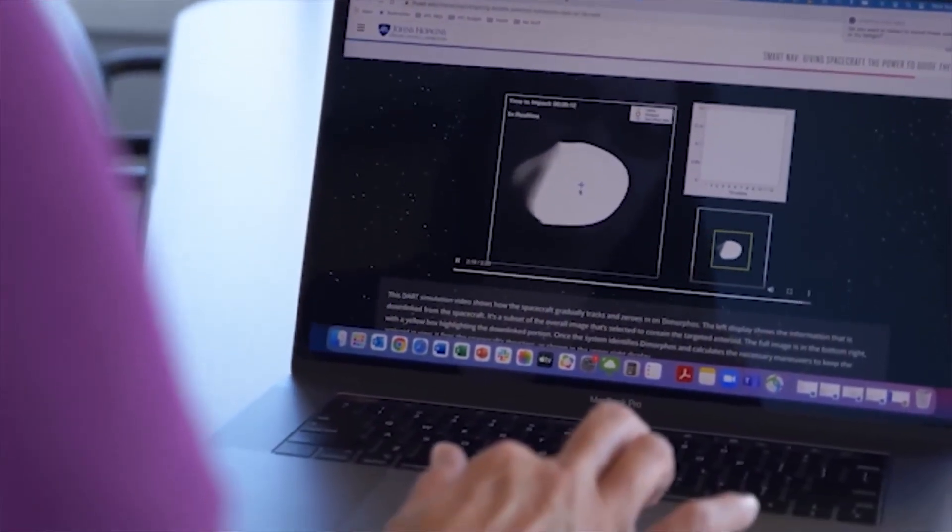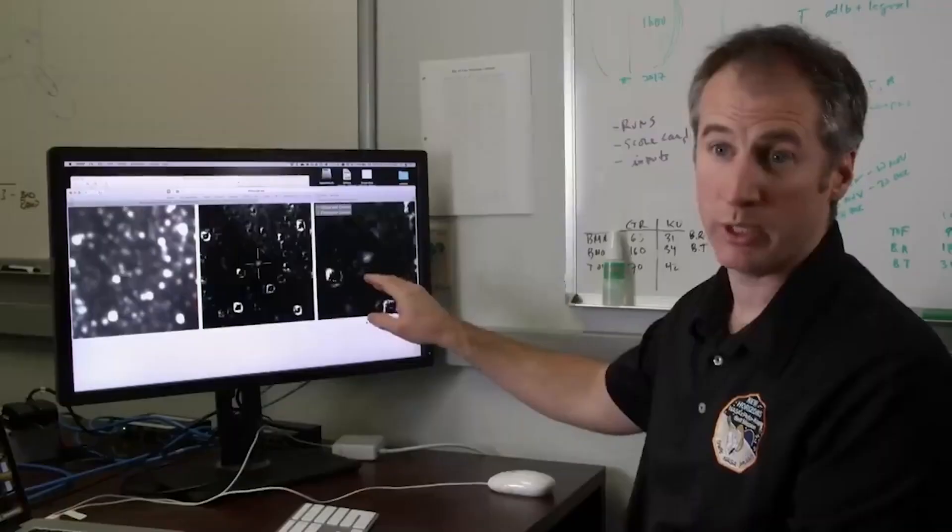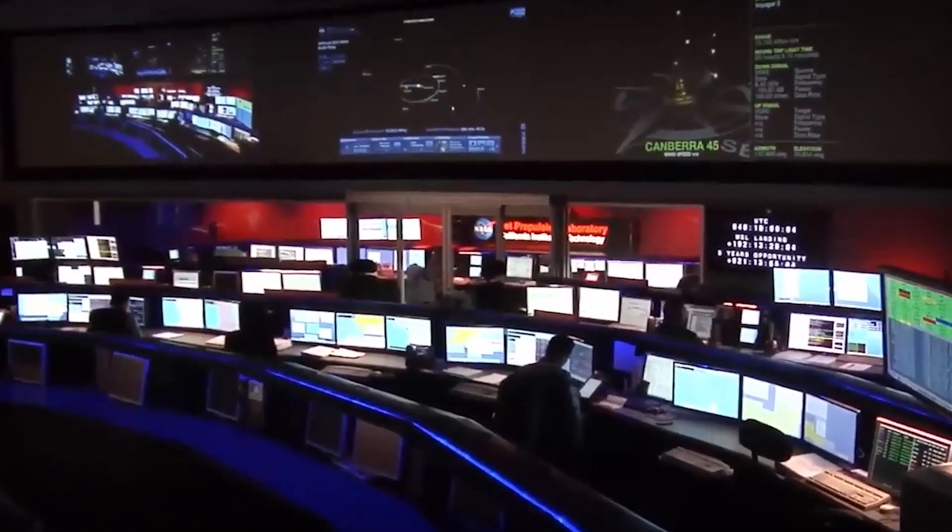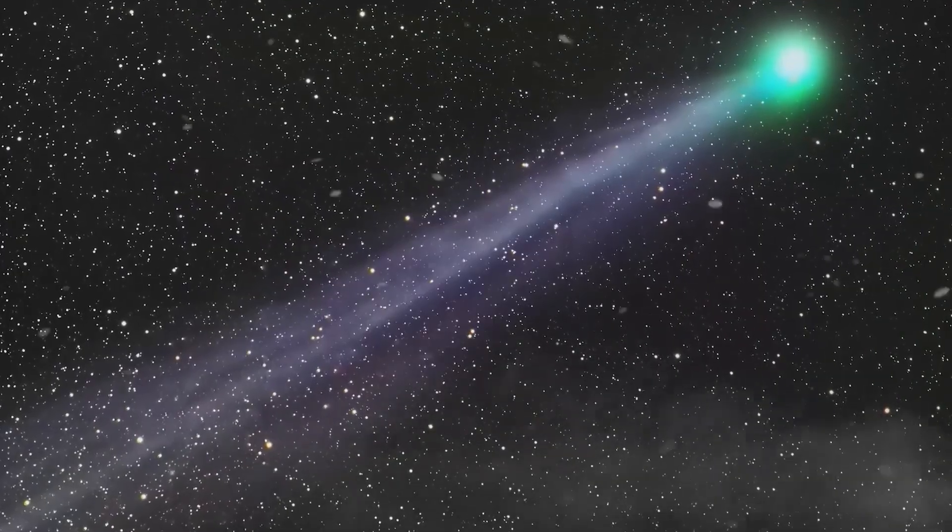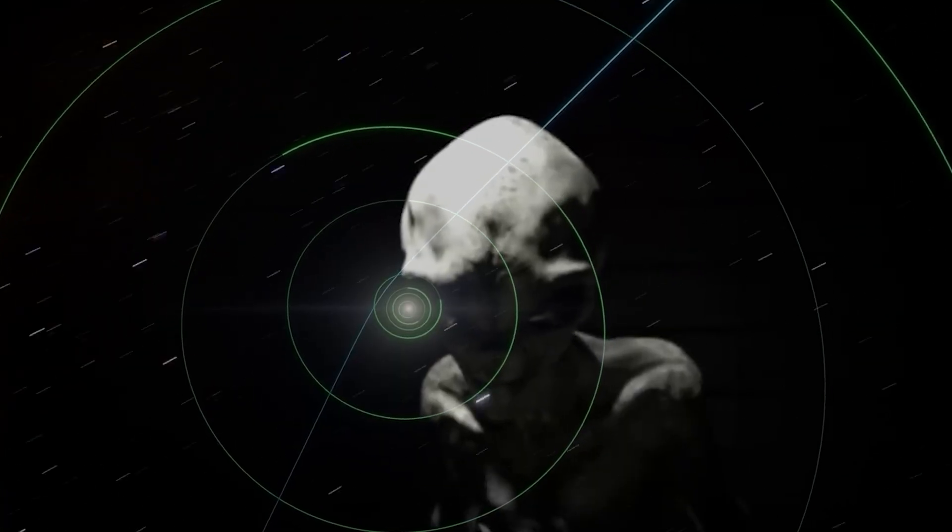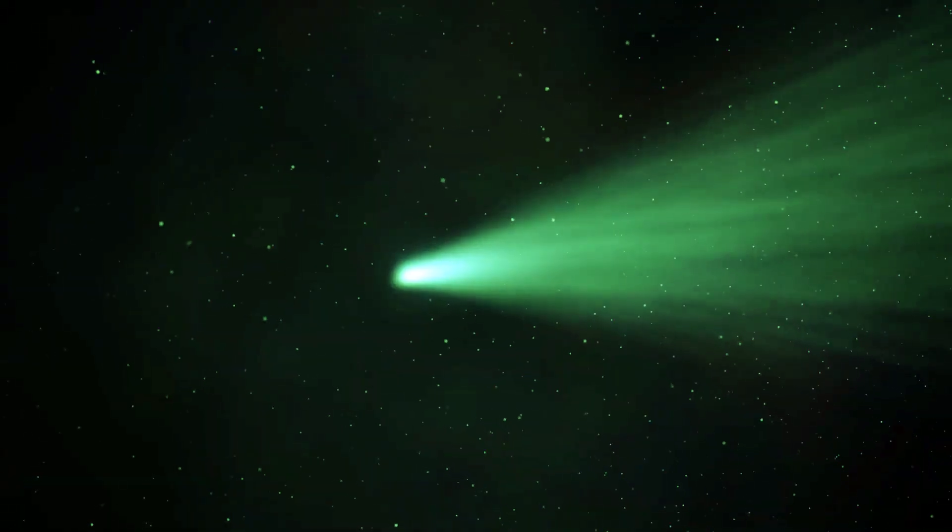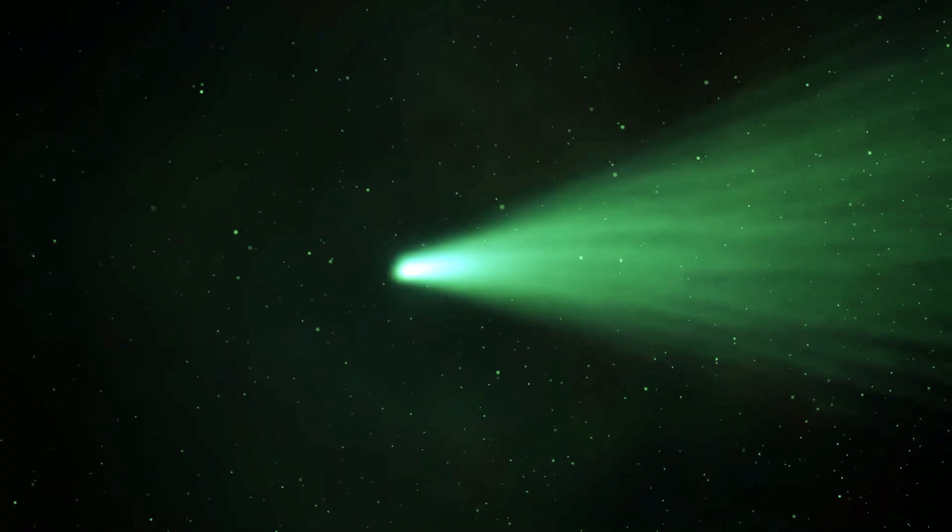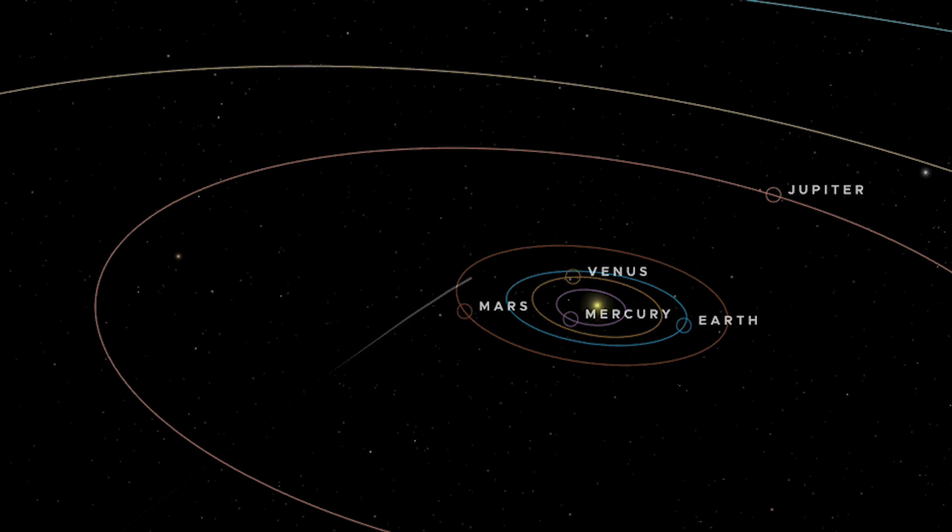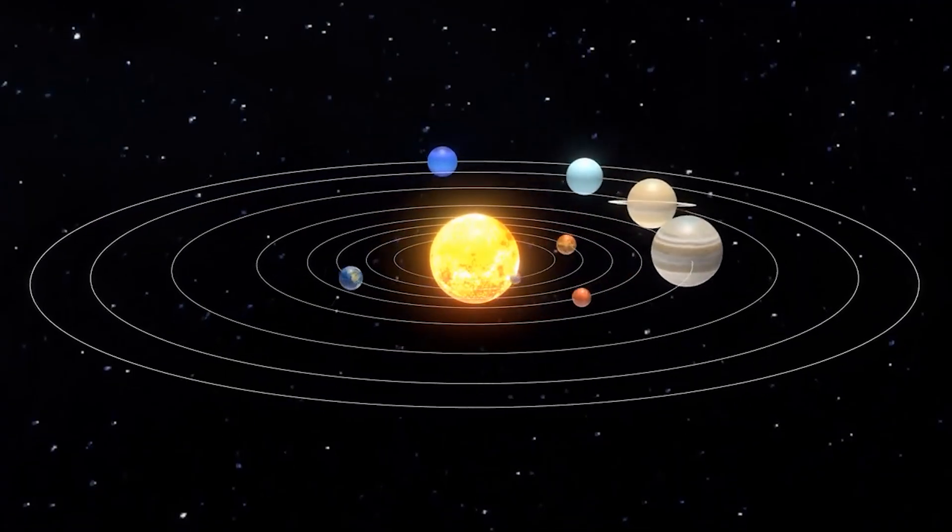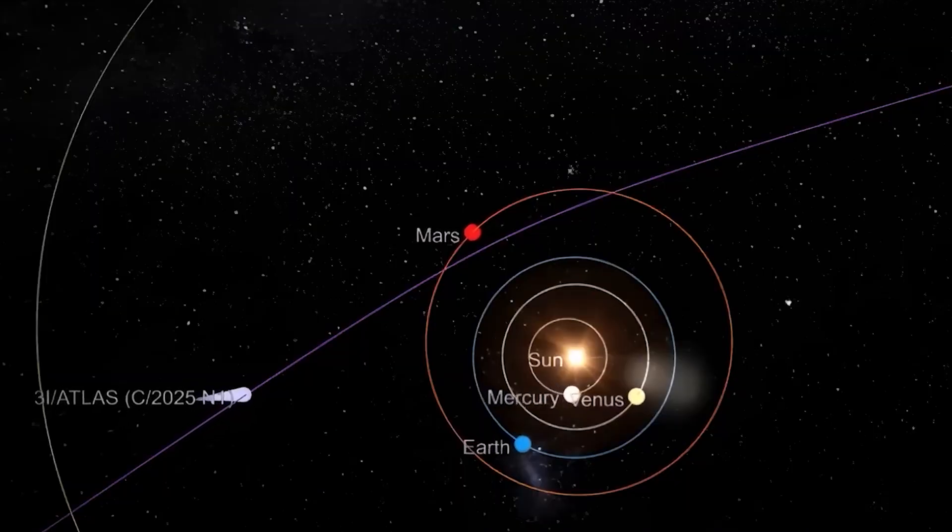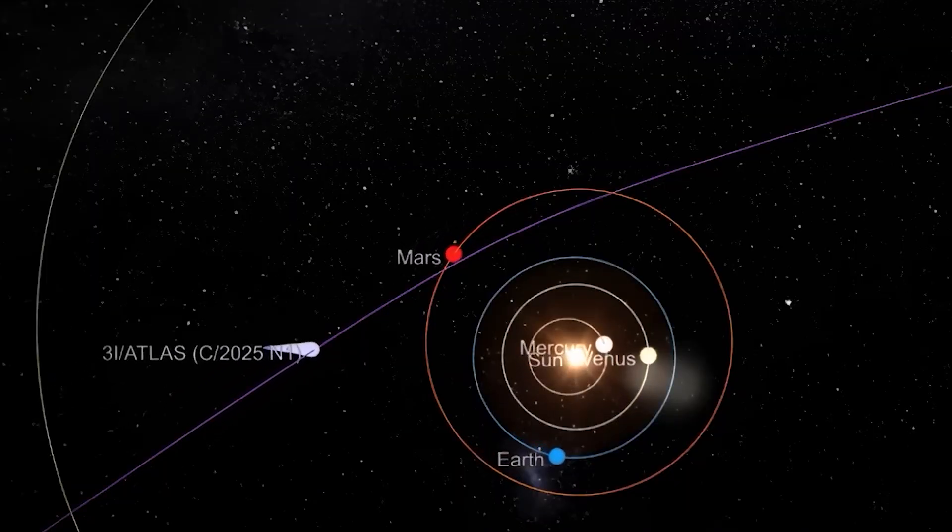But the mystery deepens. The analysis also showed a strange ratio of these carbon molecules to another compound called cyanogen. This ratio is a key fingerprint for astronomers, telling them where a comet likely came from and what it's made of. For 3I Atlas, this fingerprint is completely alien. It doesn't match the profile of comets from the Kuiper Belt, the region out past Neptune. And more importantly, it doesn't match the profile of comets from the Oort Cloud, a theoretical sphere of icy bodies surrounding our solar system almost a light year away. So if it's not from any of the known nurseries for comets, where did it come from?